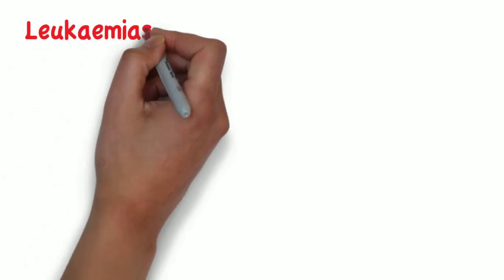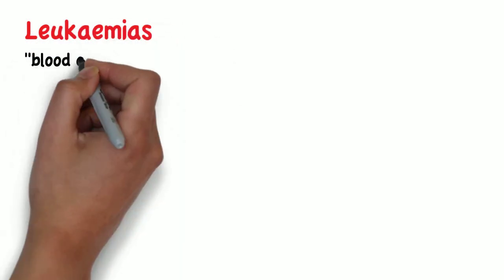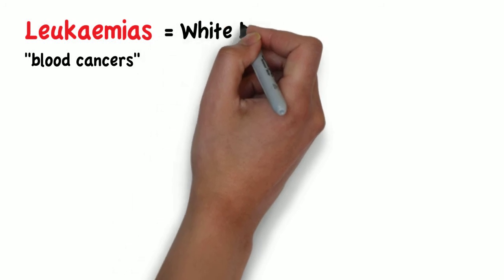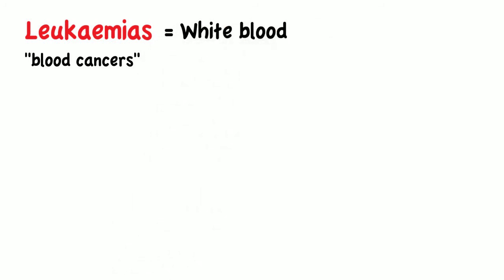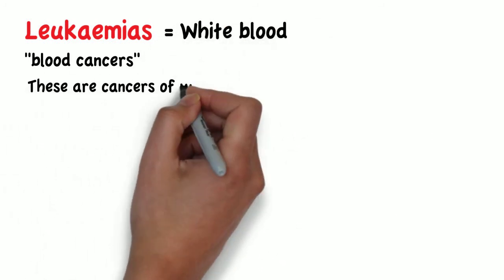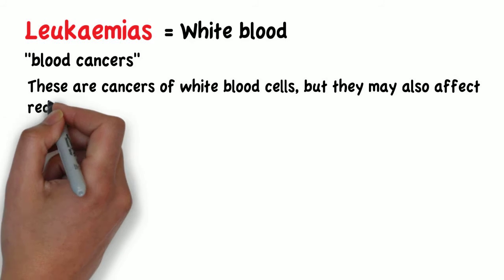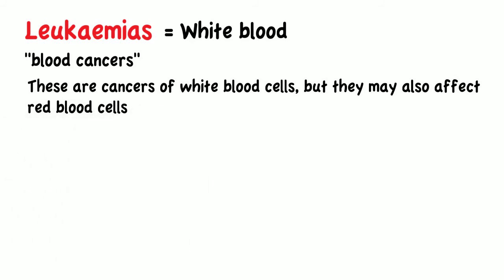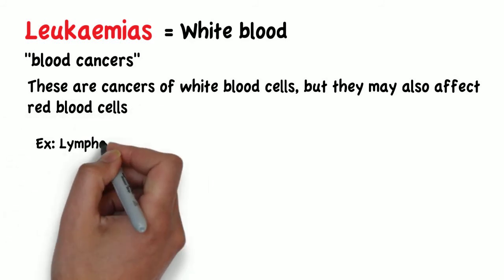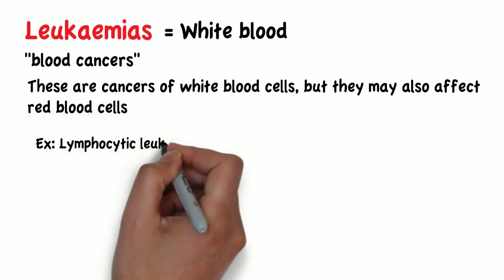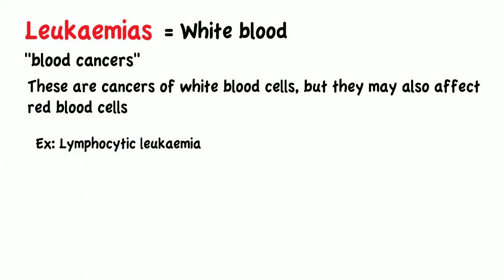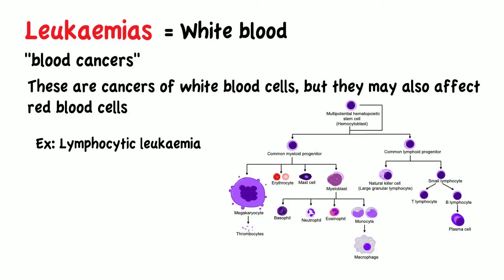Next, we have leukemias, also known as blood cancers. Leukemia means white blood, and these are cancers of white blood cells, but they may also affect red blood cells. An example of leukemia would be lymphocytic leukemia, or malignancy of the lymphoid and lymphocytic blood cell series.